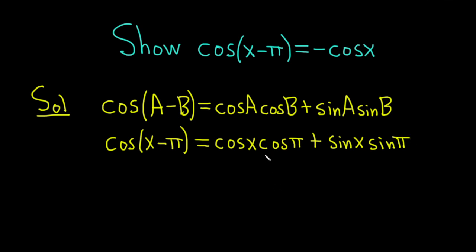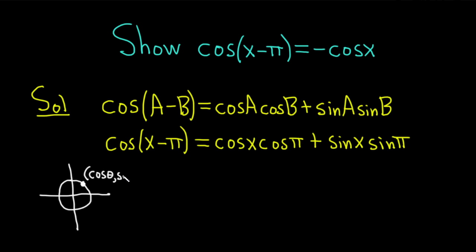Now we should think about what is the value of cosine of pi and sine of pi. To do that, we can think about the unit circle. The unit circle is a circle whose center is at the origin and has a radius of one. It has the magical property that every point on it has the form cosine theta comma sine theta. We're looking at the angle pi, and the point on the unit circle that corresponds to pi is negative one comma zero, because we go left one and up zero — it's a circle of radius one.